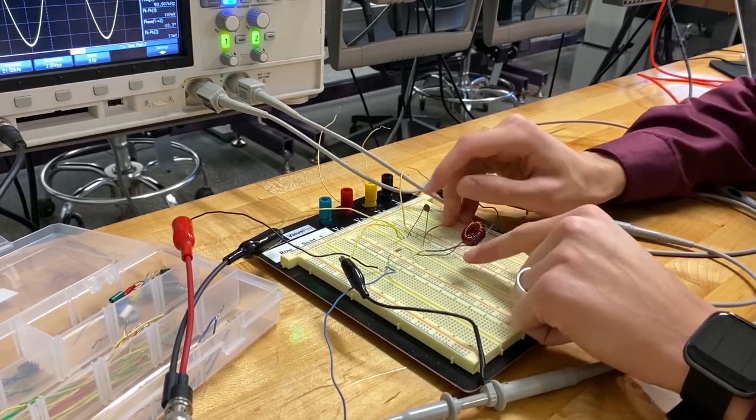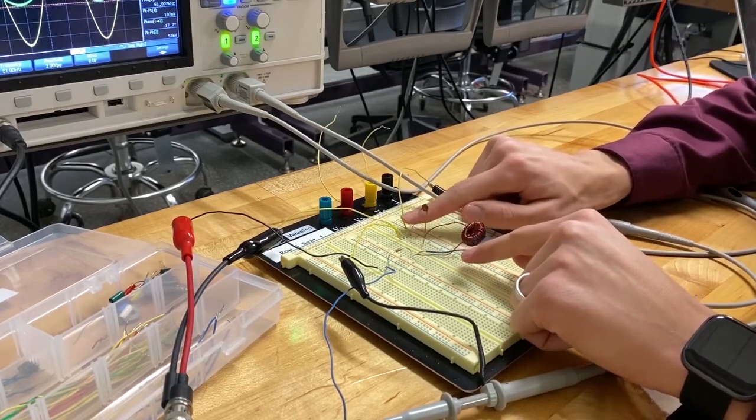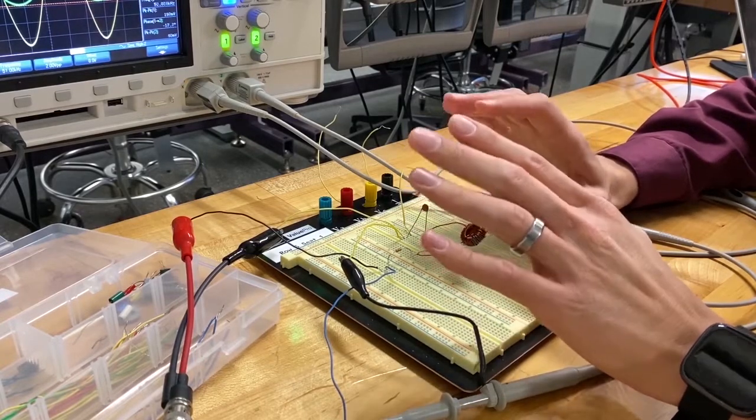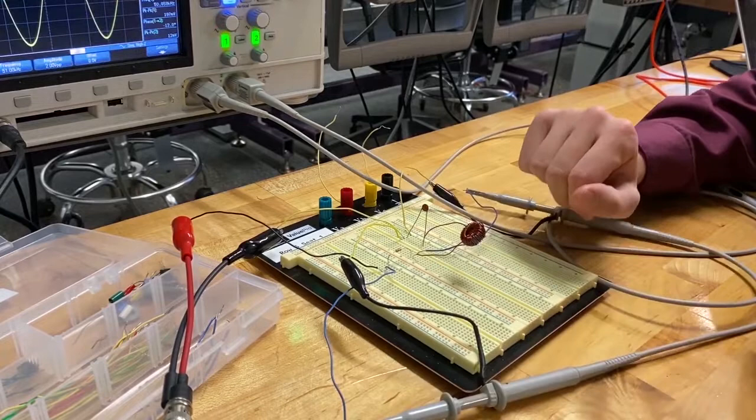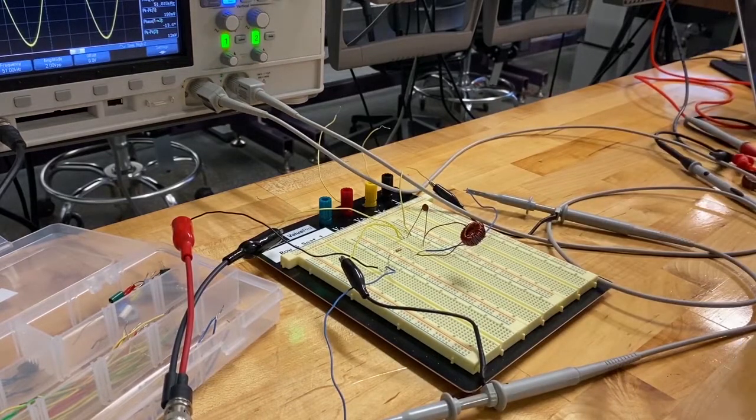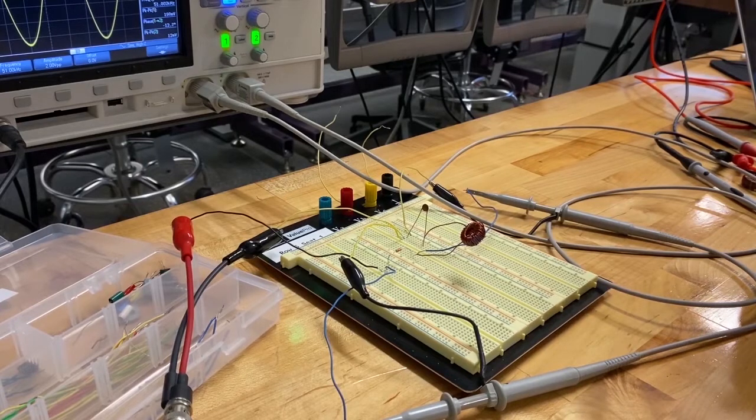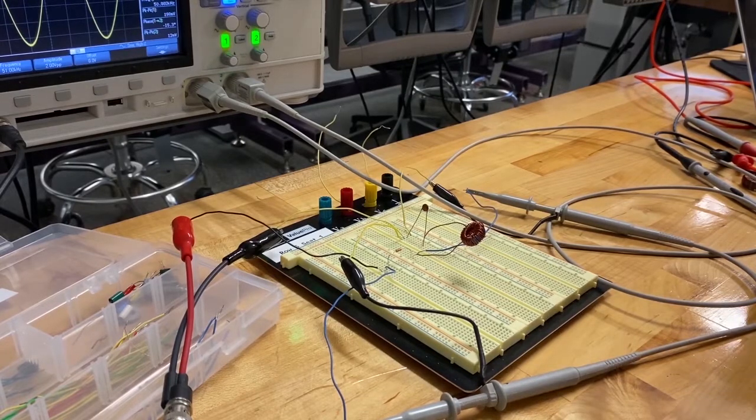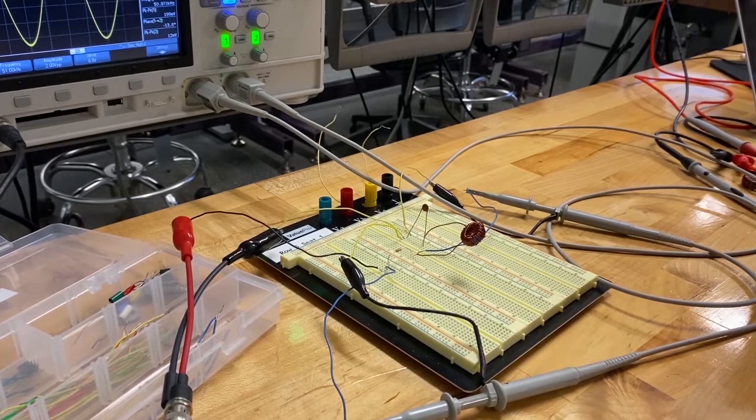So now we're measuring across both the capacitor and the inductor, which means that what we're looking at here is an RLC circuit that is acting as a band stop. So what we expect to see is we're going to start at a low frequency at a relatively high Vout. Then as we increase the frequency, that Vout is going to decrease and then increase again.